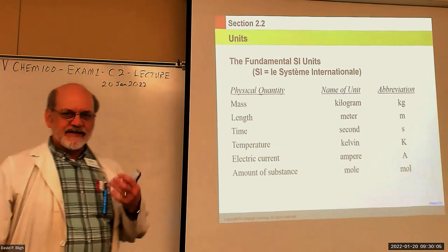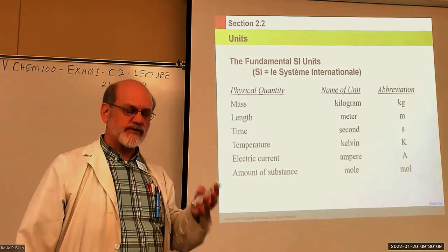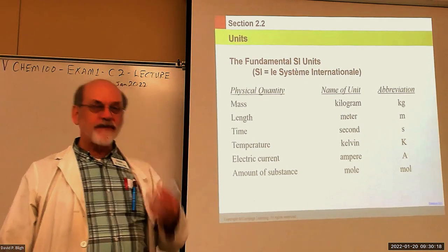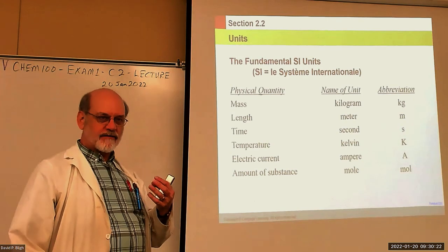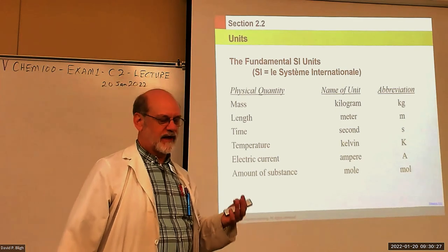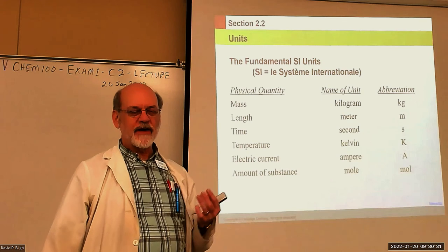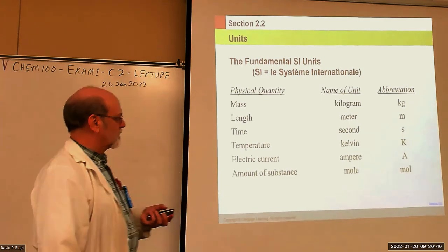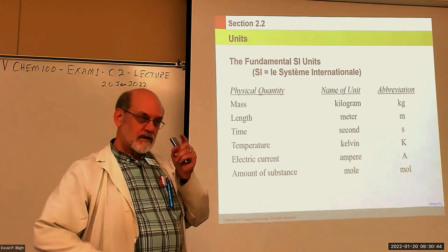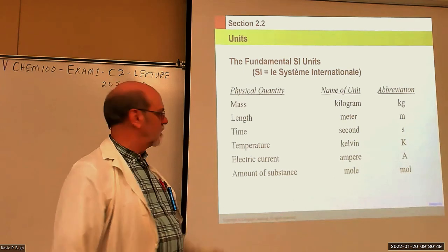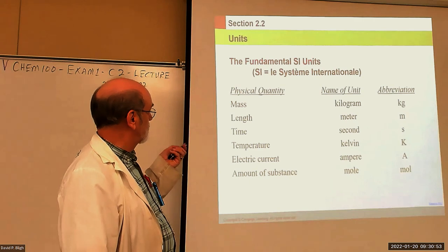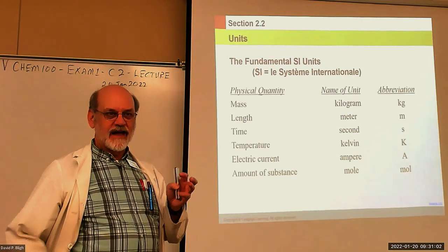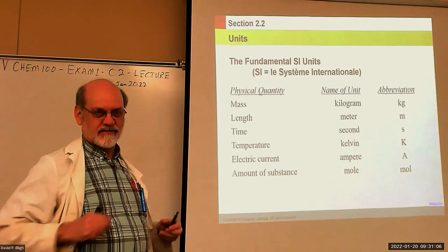One thing scientists had to do early on was agree on the units of measure to be used — what they measure and what they mean. I'll use the English system as an example: if I tell you I'm 205 pounds, you have an intuition about how much that is. But scientists need to be more exact. We need to know exactly how big a kilogram is. The kilogram is a fundamental unit — it is defined, and there is a standard kilogram somewhere.